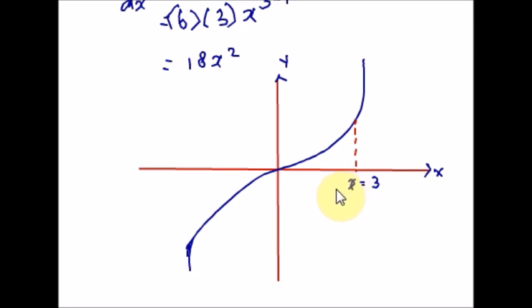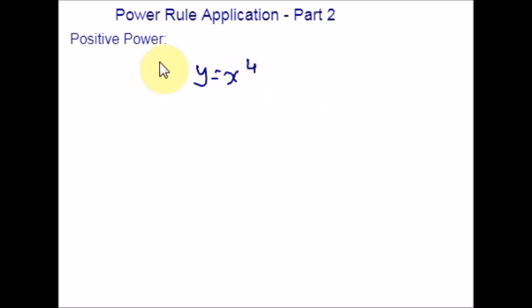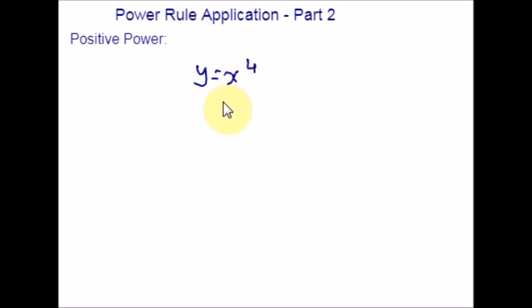Hope you are clear with this example. Now I will take one example with a hidden coefficient. In the previous example we had a visible coefficient — it was obvious. Now let's see one more example with a hidden coefficient and how we apply the power rule there. In order to use the power rule, we need to rewrite the function to fit the pattern, because the coefficient a seems to be missing from this equation.